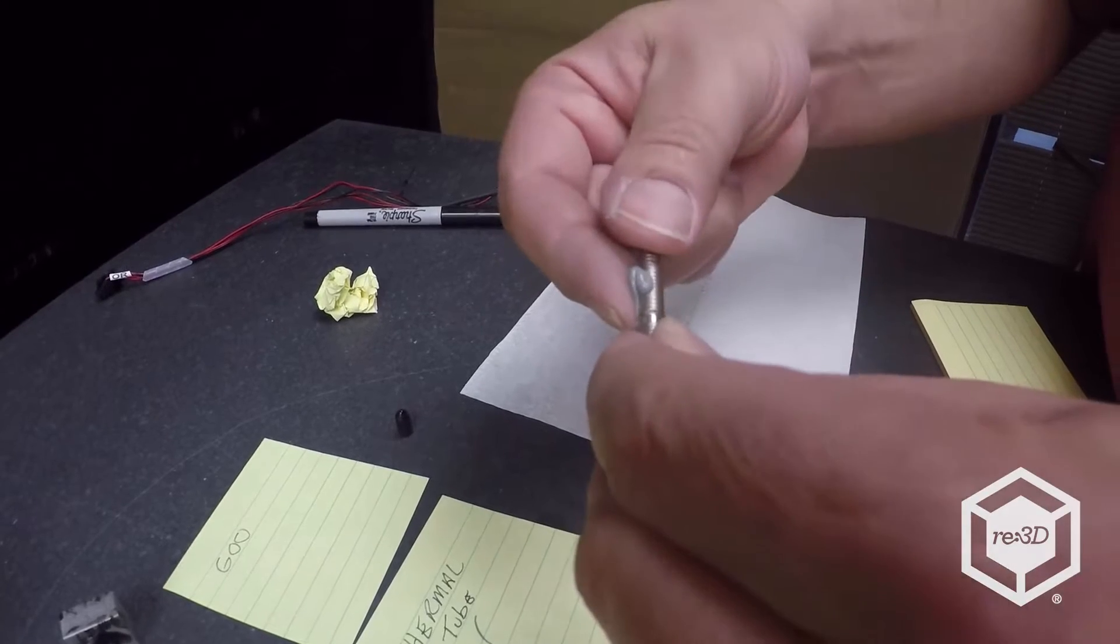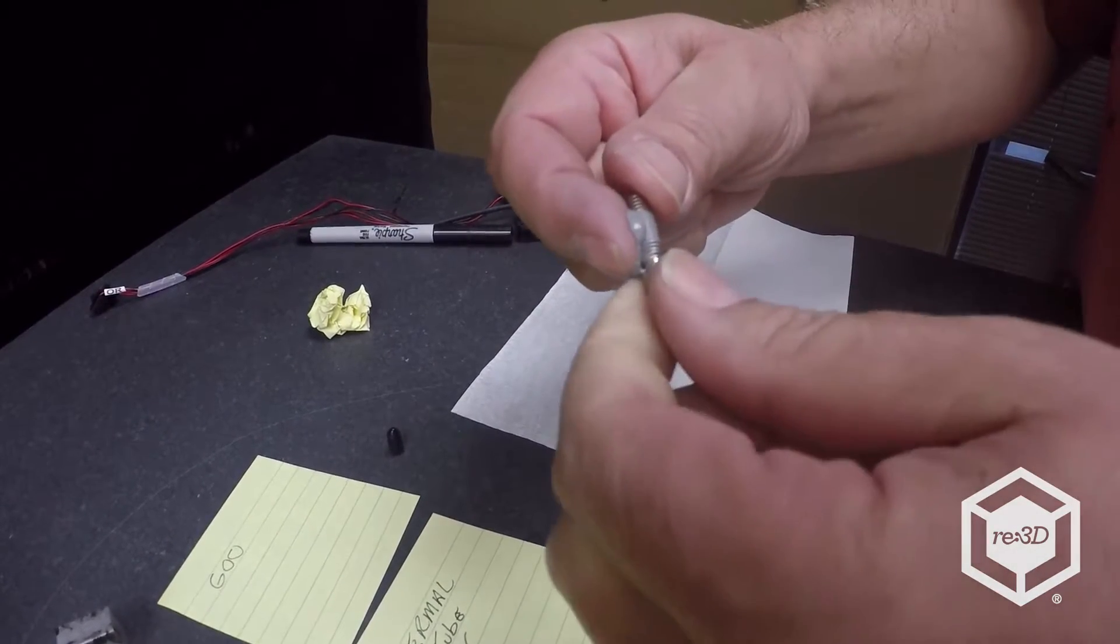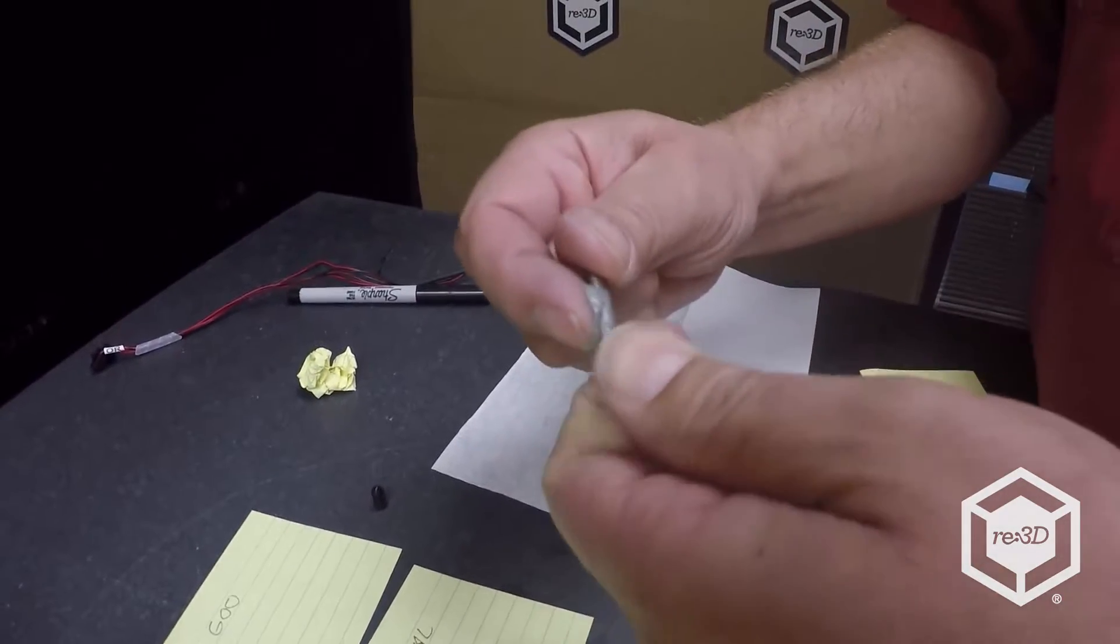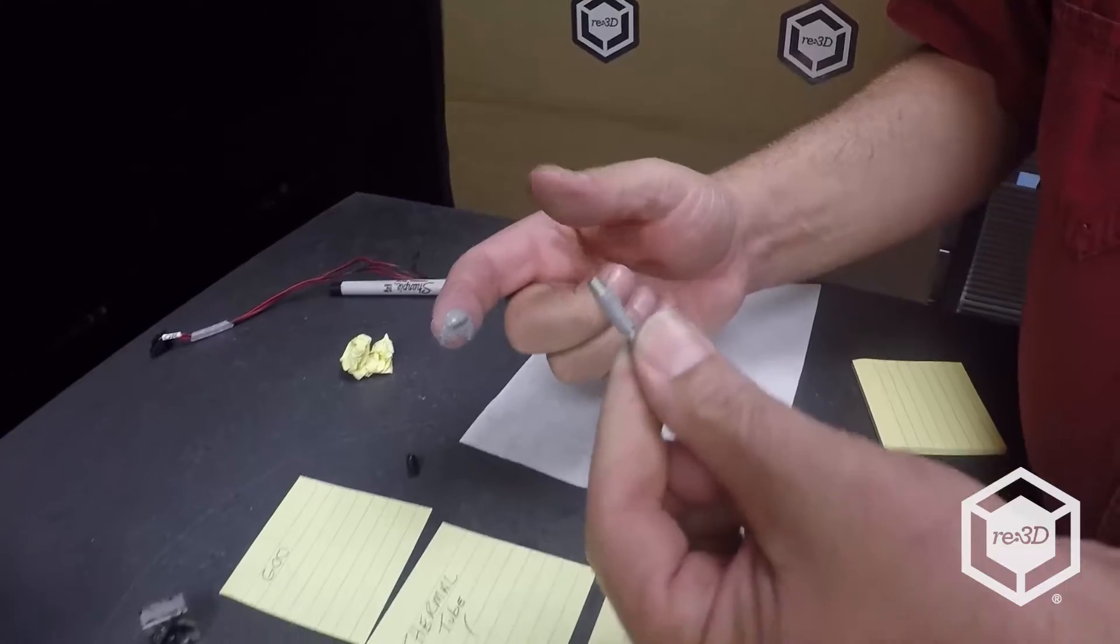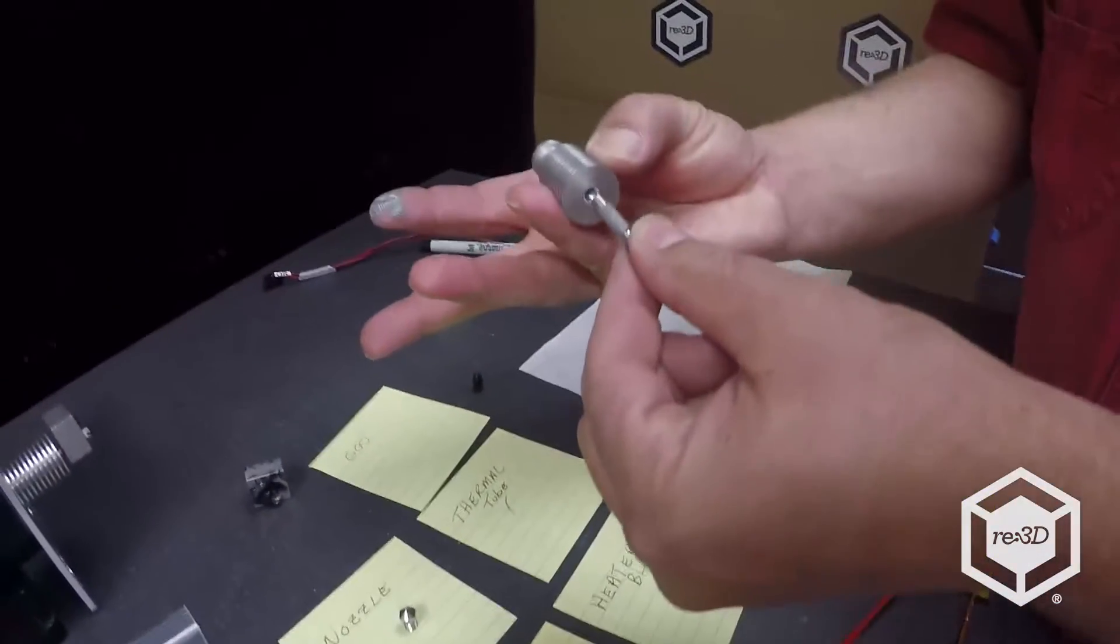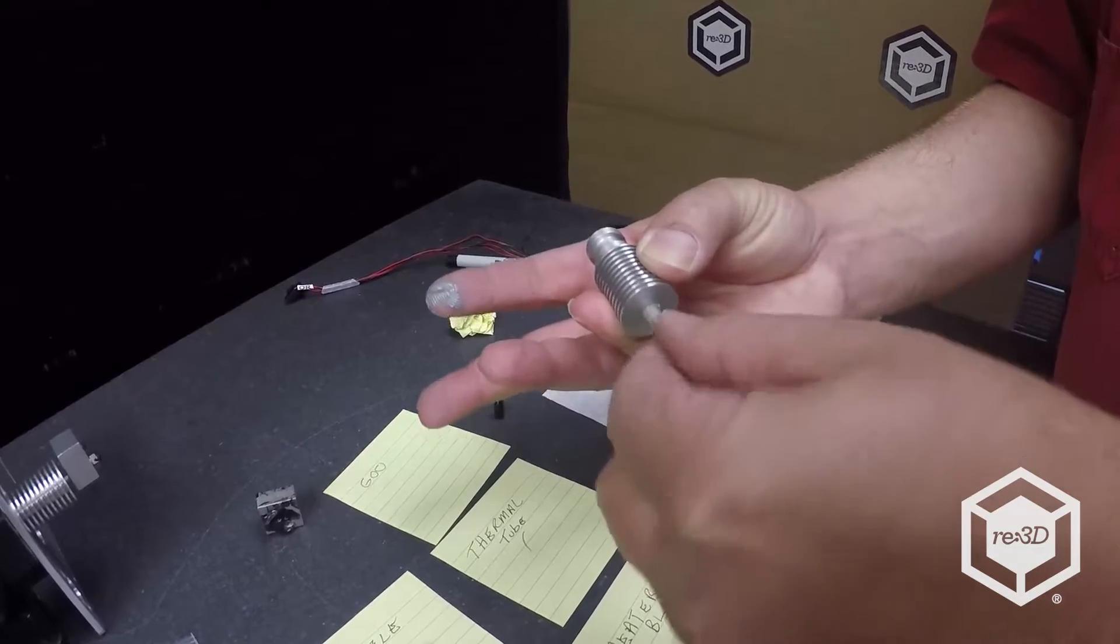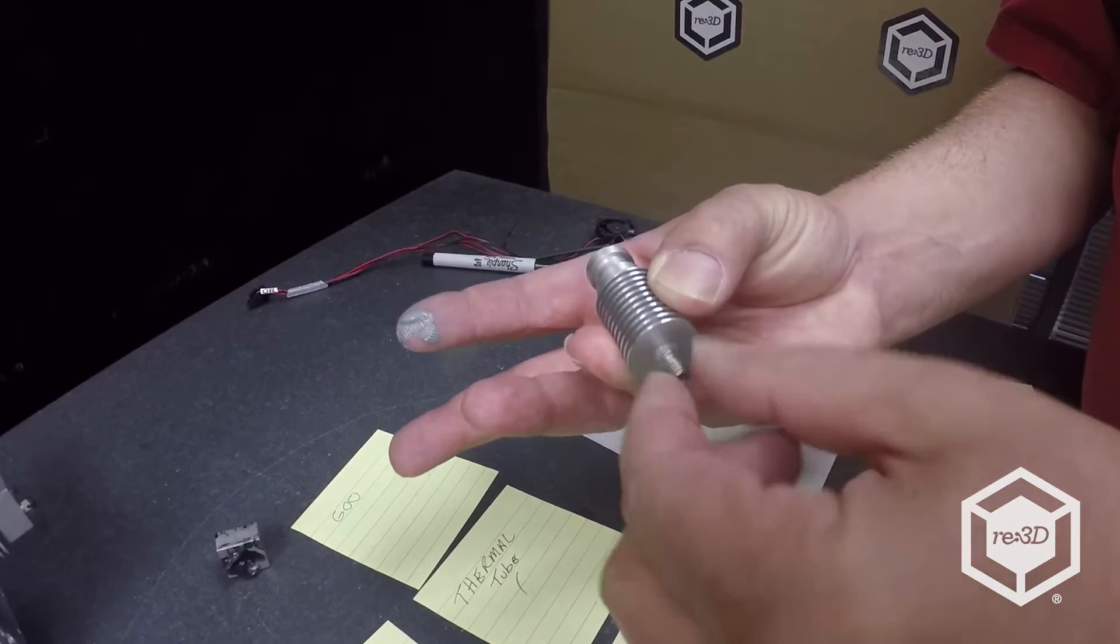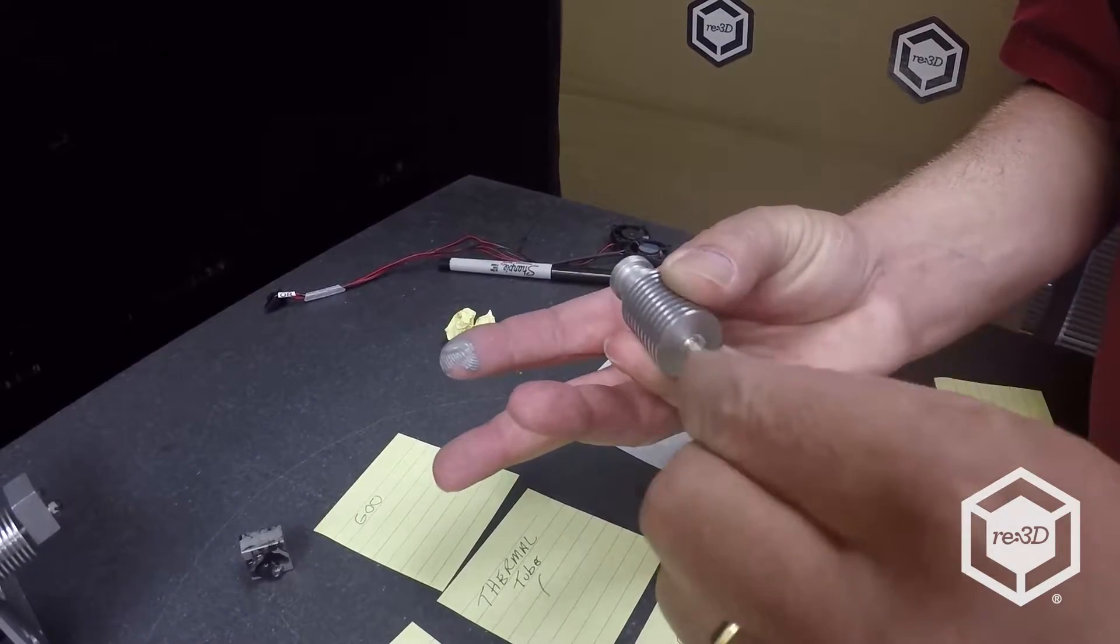We're going to spread it around down there. Make sure we get it deep in all the threads. You shouldn't be able to see any metal, or you'll just see the ridges as you do it. Then we're going to screw it in the heat sink. Get it in all the way up. There we go.